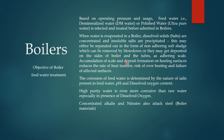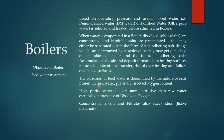Alternatively, scale and deposits may form on the sides of the boiler and tubes. This accumulation of scale on heating surface areas reduces the rate of heat transfer, creating a risk of overheating and failure of the affected surfaces. If scale formation is present, heat transfer is reduced, and if the flame directly impinges inside the furnace, it can lead to bulging or failure of that area. Corrosion will also occur.